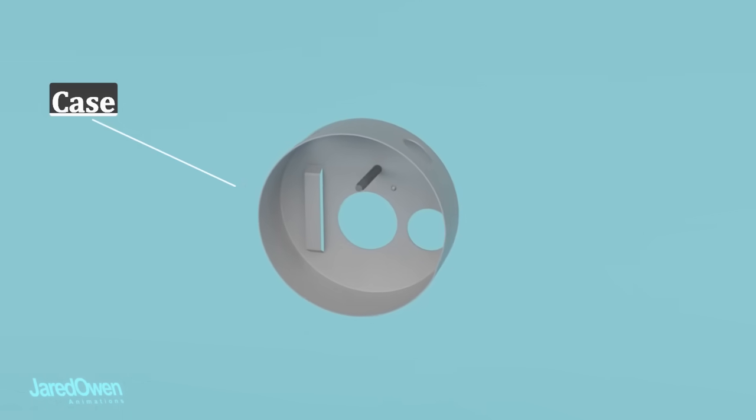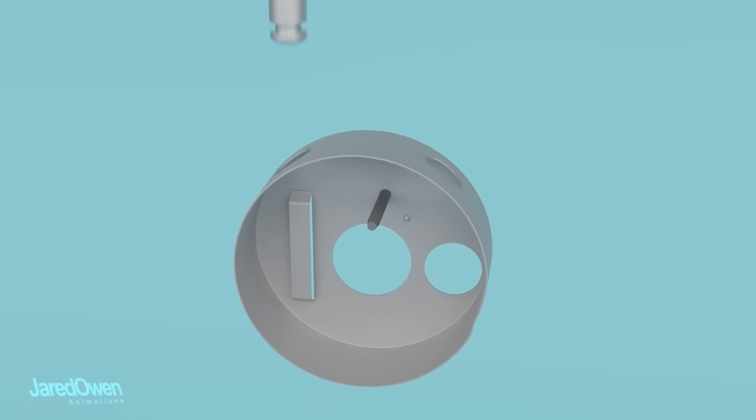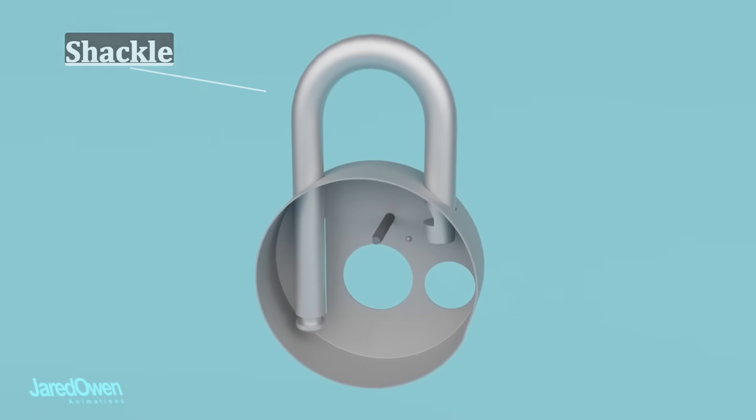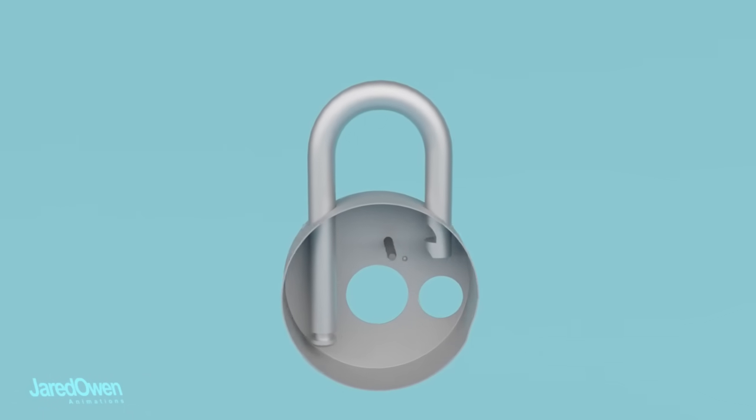Here's the case that holds all of our parts. This metal curved bar is called the shackle. It won't come out until the right combination is put in. Then it pops right open.